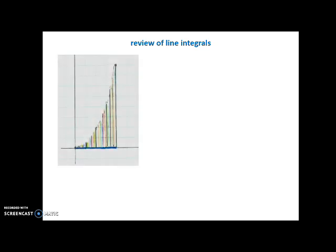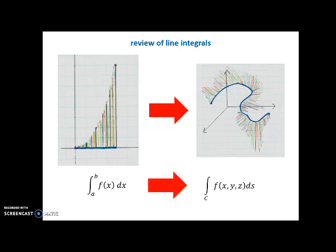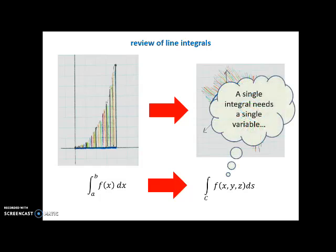Let's review line integrals. Back in single variable calculus, we actually integrated along a line, namely the x-axis. More recently, we learned about line integrals where we integrated along a more general curve in three dimensions. The single variable integral was the integral of f(x) from a to b dx, and the line integral was the integral along C of f(x,y,z) ds. dx was the infinitesimal change along the x-axis, and ds is the infinitesimal change along the curve. However, the line integral is a single integral, and a single integral has to be in terms of a single variable before we can compute it.